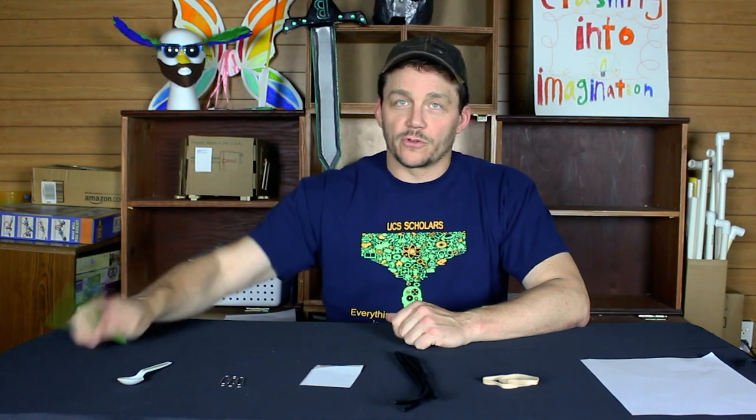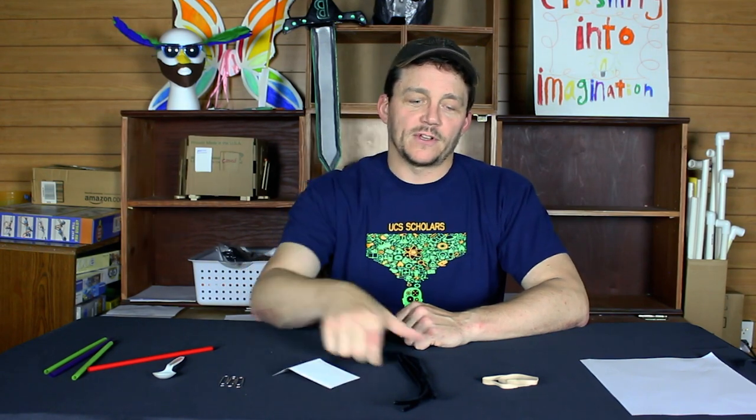For this challenge we have to build a structure that will move when the wind blows on it. To do that we will use four straws, a plastic spoon, three paper clips, four mailing labels, three pipe cleaners, two rubber bands, and a piece of paper.